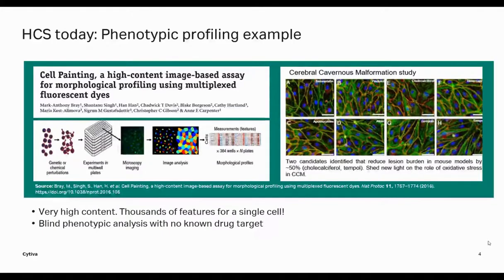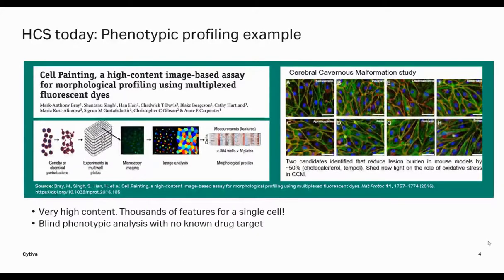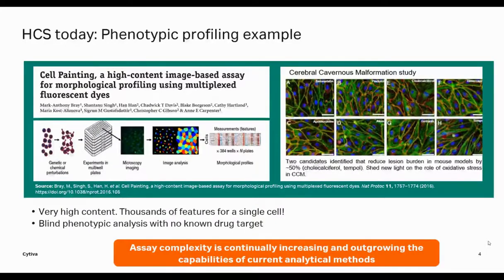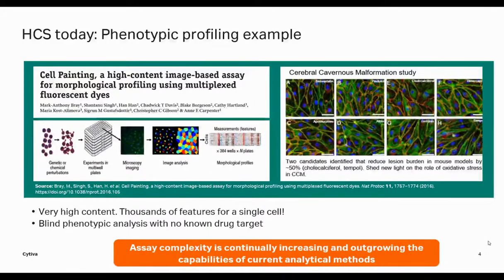We're extracting thousands of features for every cell within an image. It doesn't require that we know what the target is for a drug or fully understand the function of a gene. It's simply looking for differences between two different conditions by leveraging all the information-rich content in a picture. Assay complexity is continually increasing, and as you extract more and more information from an individual cell, the data becomes overwhelming. So what are we going to do with this? How are we going to distill it down to something actionable?